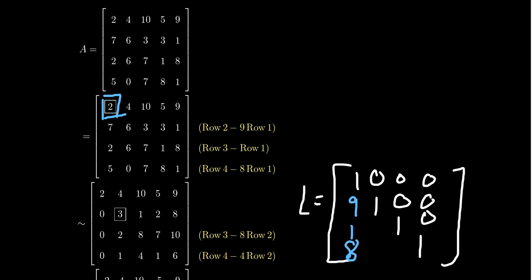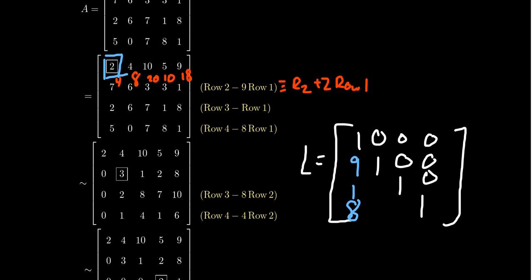Now we go through the actual calculations. Negative nine mod 11 is the same as plus two, so row two plus two times row one: two times two is four, and seven plus four is 11, which cancels to zero. Four times two is eight; six plus eight is 14, subtract 11 gives three. Two times ten is 20; plus three is 23, subtract 22 gives one. Five times two is ten; plus three is 13, subtract 11 gives two. Two times nine is 18; plus one is 19, subtract 11 gives eight.